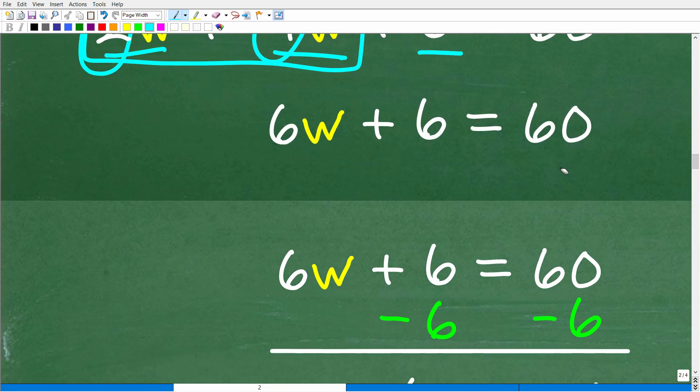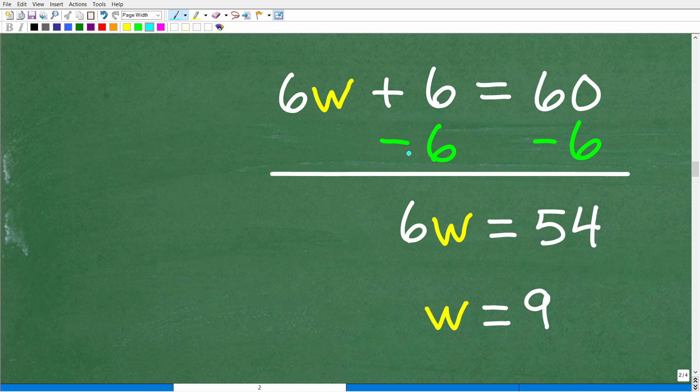Continuing on, what do we need to do? We need to get all our numbers on one side of the equation and all of our variables on the other side of the equation. So we're going to subtract 6 from both sides of the equation. Remember the golden rule in algebra is whatever you do to one side of the equation, you could do whatever you want to one side of the equation as long as you do it equally to the other side. So we're going to subtract 6 from both sides of the equation. 6W plus nothing is 6W. Positive 6 minus 6 is 0. And 60 minus 6 is 54. So now we're down to the very last step to solve for W. We have 6W is equal to 54. So all we need to do is divide both sides by 6. And we get 6 divided by 6, which is 1 or 1W or W. And 54 divided by 6 is 9. So W is equal to 9.